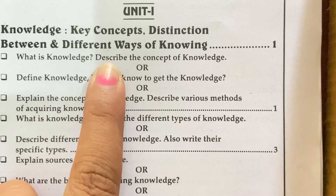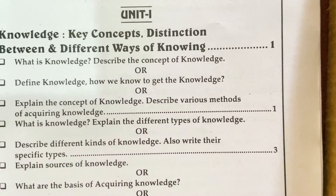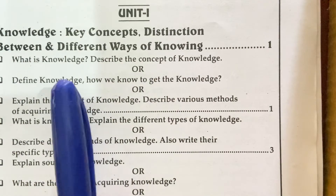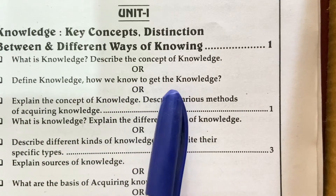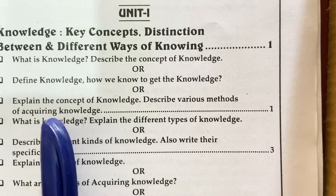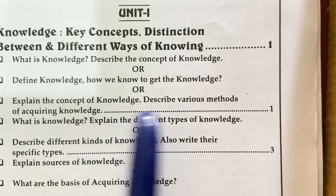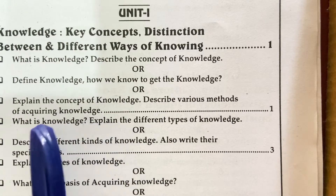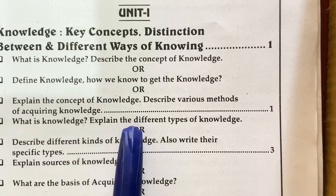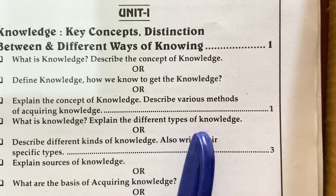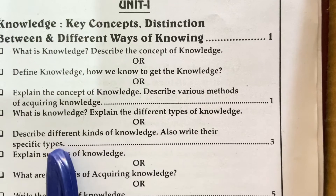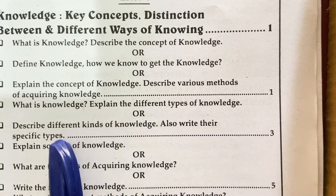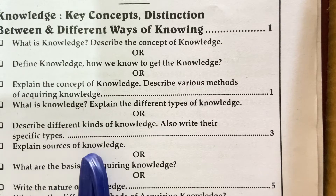It can also be asked as: define knowledge and how we get knowledge. Second: explain the concept of knowledge and describe various methods of acquiring knowledge. Third: describe different kinds of knowledge and explain the specific types and sources of knowledge.